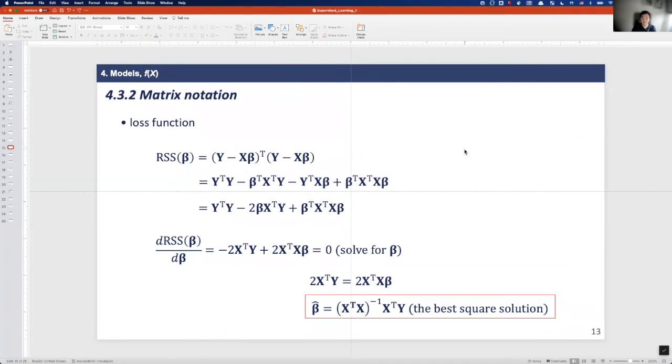If you don't, please google matrix cookbook to refresh your memory. So the best least squares solution here is this one. And let's go back to see how we can implement this in Python data structure.